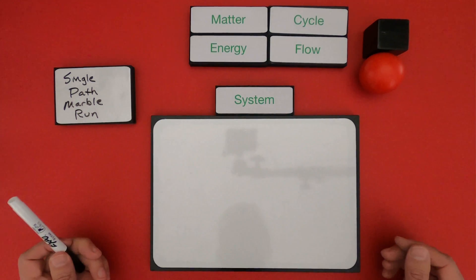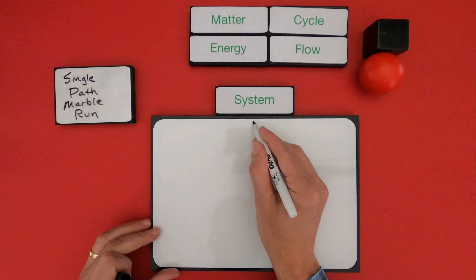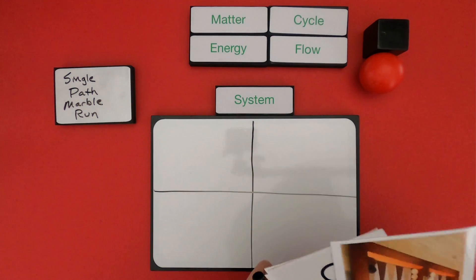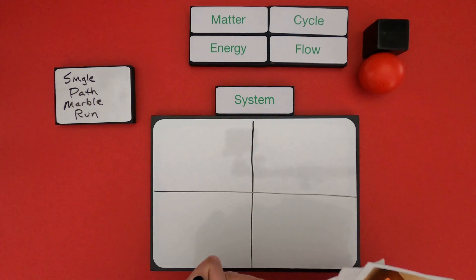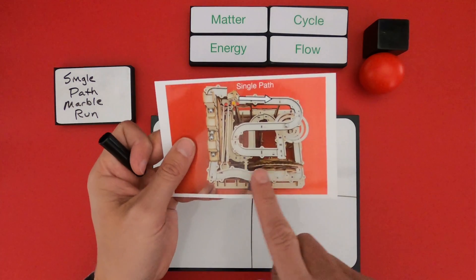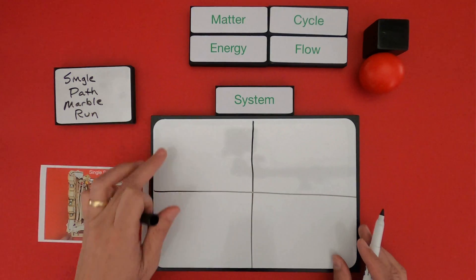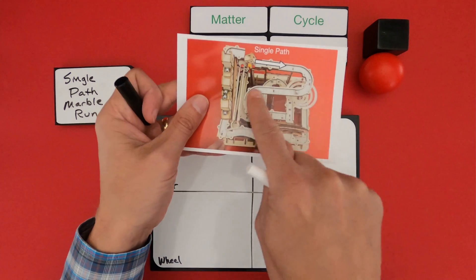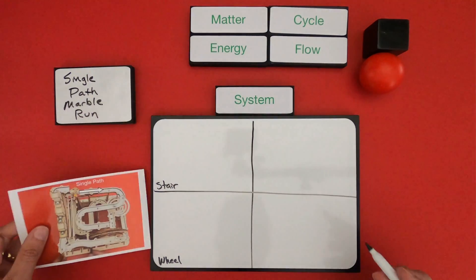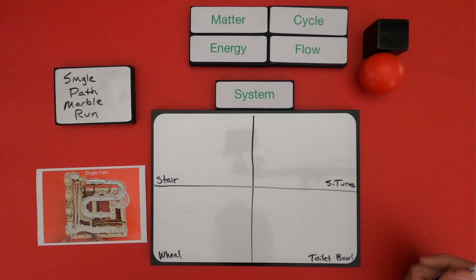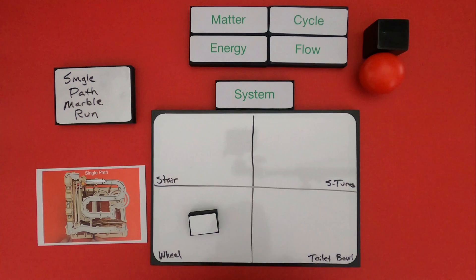I want to write down the major features I saw, so I'm going to divide my board into four parts. The two big features are the wheel — which turns and lifts the marbles up — and the staircase. The other big features are the S-turns as the marbles go down, and then there's the toilet bowl. Next I'm going to start looking at the matter. The matter that's moving around is the marbles, and they were found in all four of those different features.